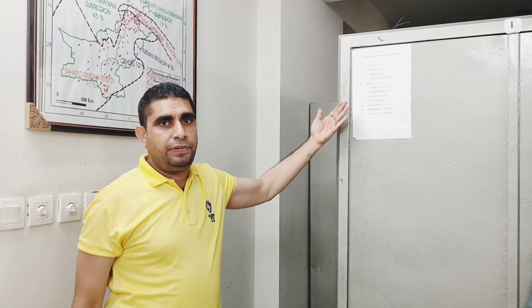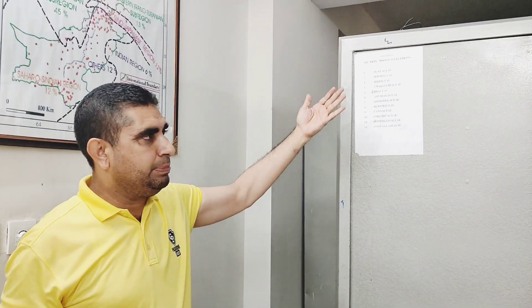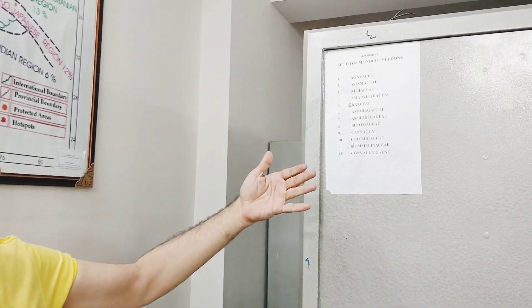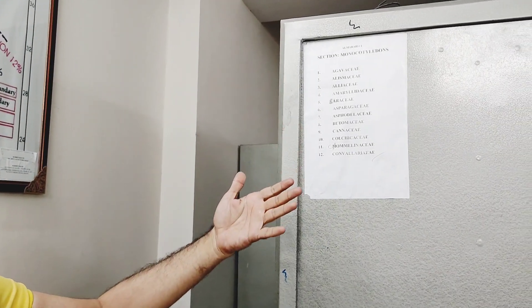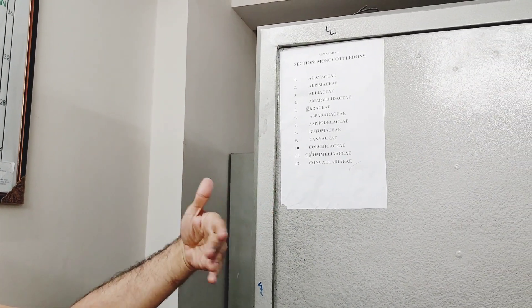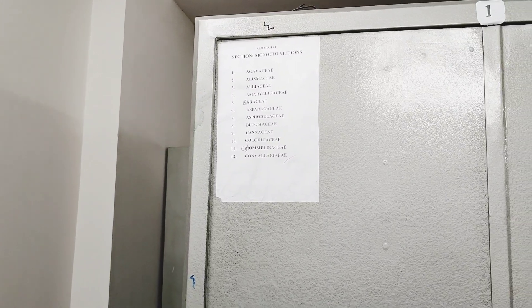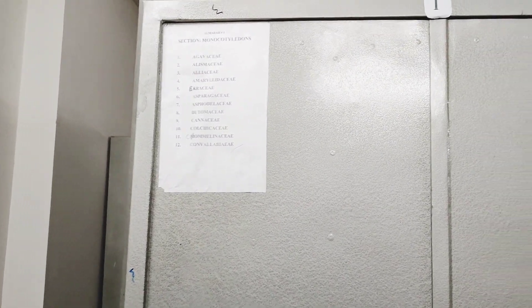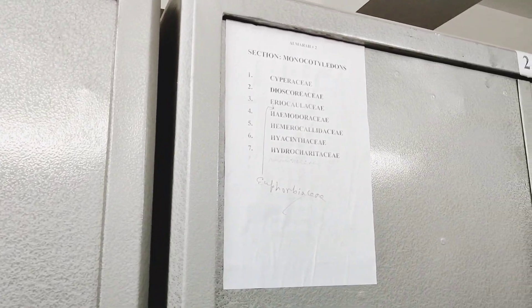In the Herbarium of Azharayi University, the plants are organized by family orders, then genera, and then species. This follows international standards for the storage of specimens in the herbarium cupboards.